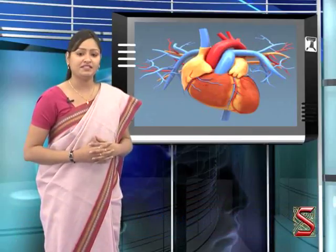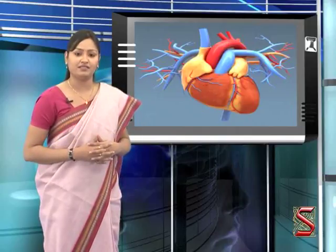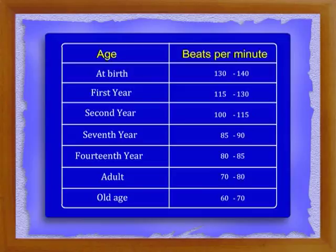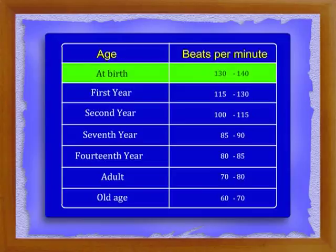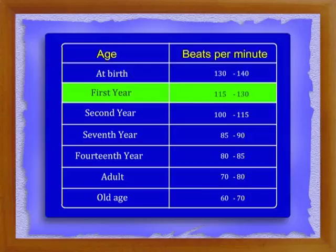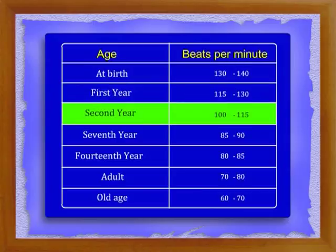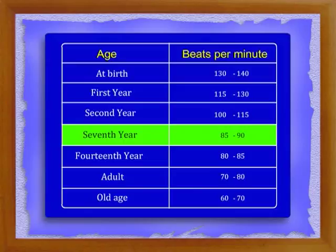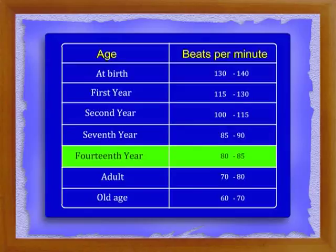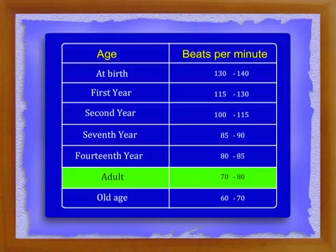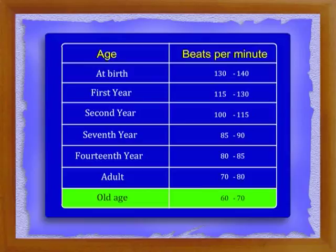A tabular form showing the heartbeat in persons of different ages at rest: at birth it is about 130 to 140 beats per minute; in the first year, 115 to 130 beats per minute; in the second year, 100 to 115 beats per minute; in the fourth year, 80 to 85 beats per minute; in adult age, 70 to 80 beats per minute; and in old age, 60 to 70 beats per minute.